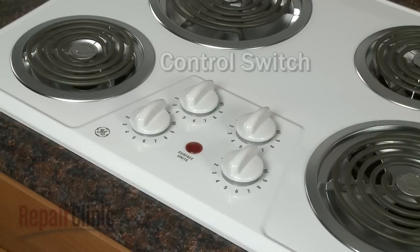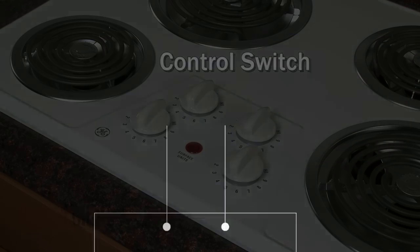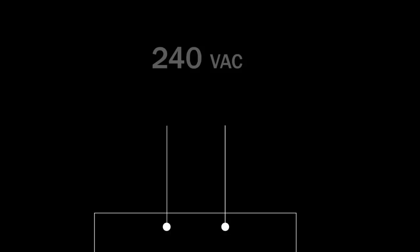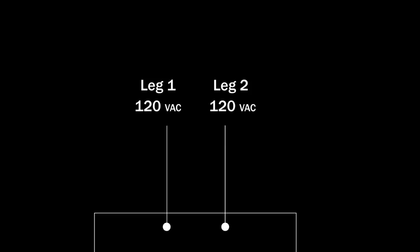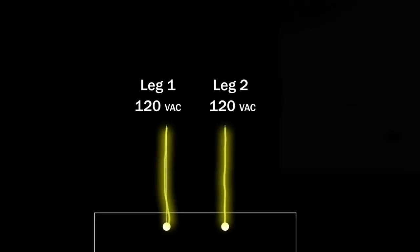Each element is controlled by its own switch. The stovetop operates by using 240 volts of alternating current through two legs of voltage, each carrying 120 volts.